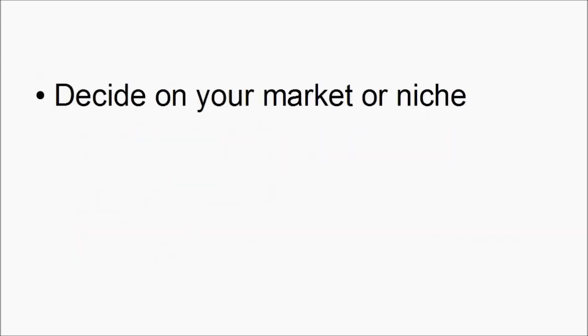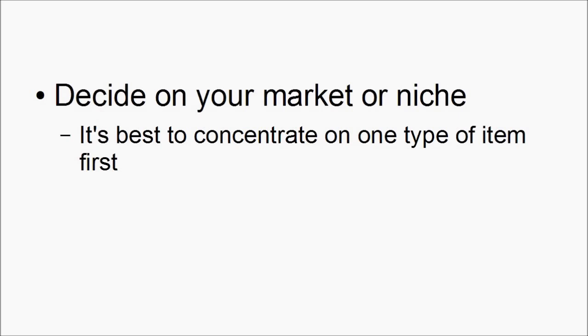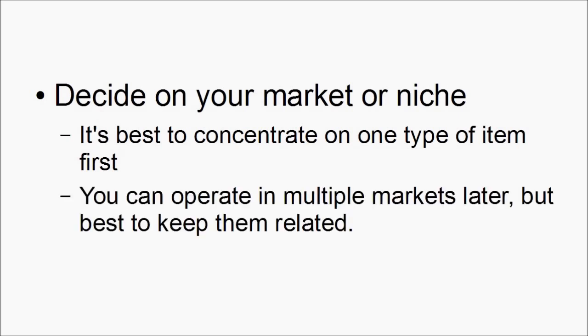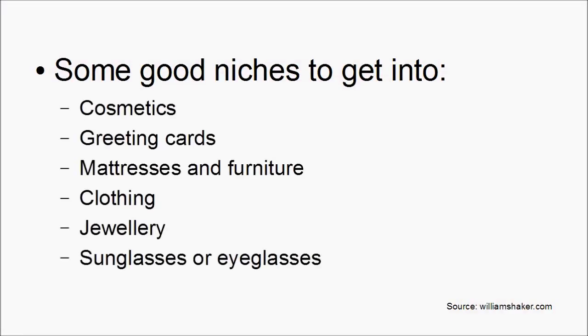You don't have to go out and buy the stock from the wholesaler, store it, and then try to sell it hoping to make a profit. So how do you get started as a drop shipper? The first thing you need to do is decide on your market or your niche. It's best to concentrate on one type of item first, but you can operate in multiple markets later — it's best to keep them related. There are lots of different niches to get into, and a lot of that depends on your own personal preference.